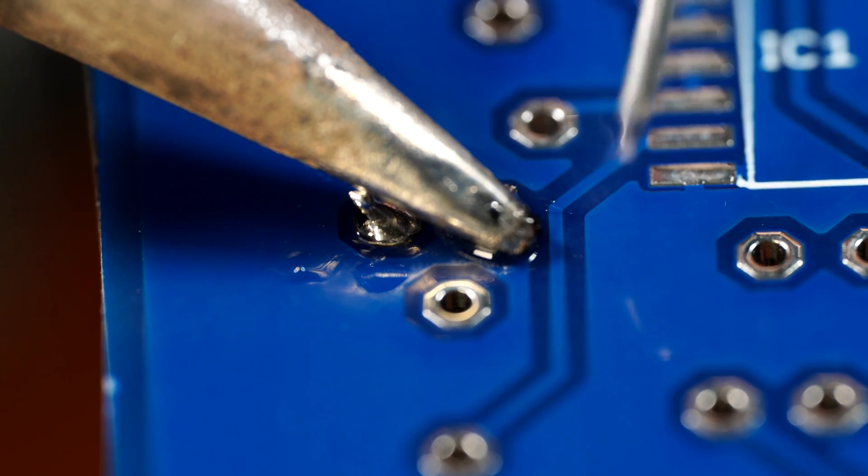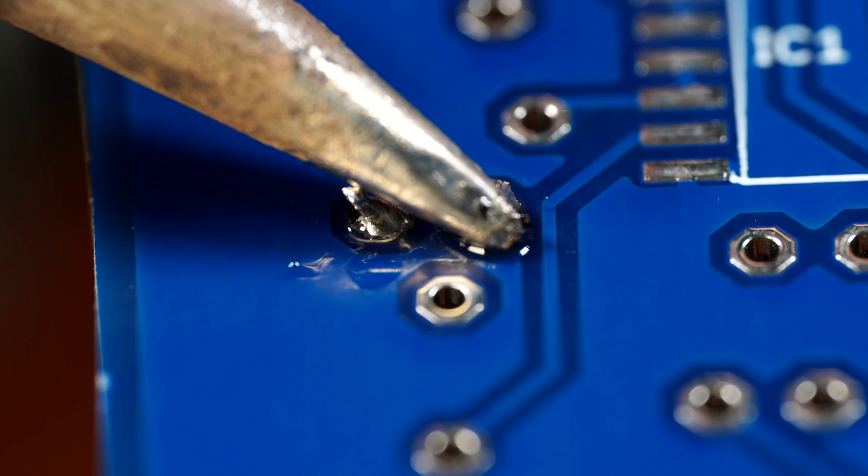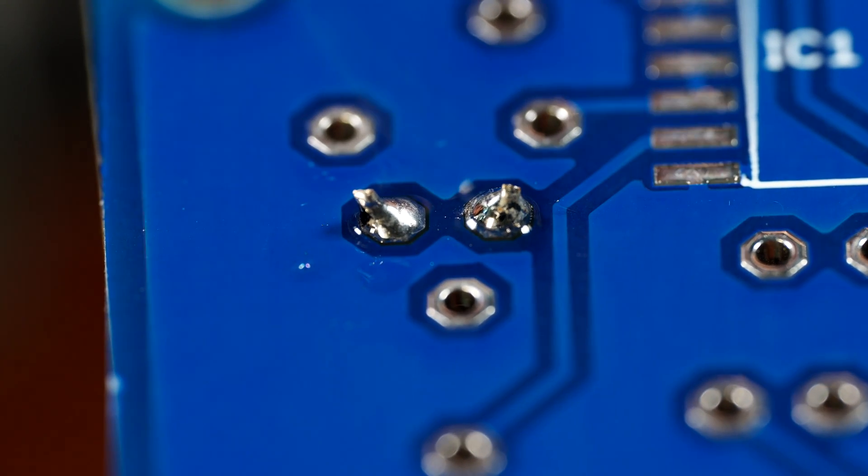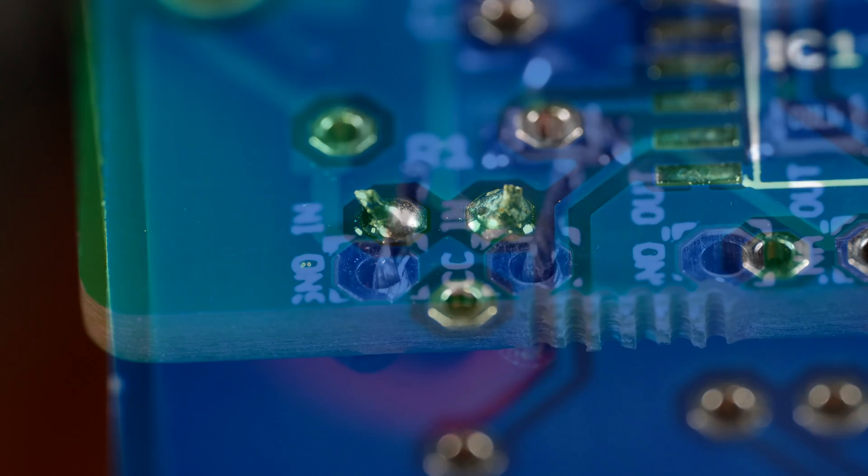Let's look at the second component lead as we get this one soldered in. So once again, tin the soldering iron, go in, get some solder to flow through both pieces of metal, pull the soldering iron off, let it solidify and cool, and you're good to go.